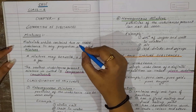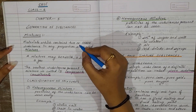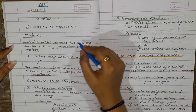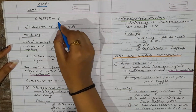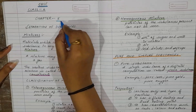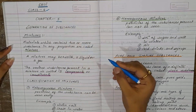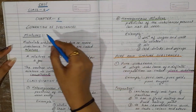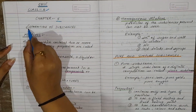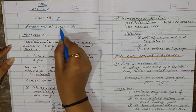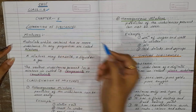Hi students, welcome to ScienceWise. Today we are going to study chapter 5 of class 6. The name of the chapter is Separation of Substances.